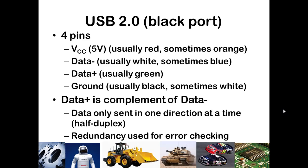Going from USB 1 to 2 was not that much different — really a matter of data speed — but there was a significant change with USB 3.0. USB 2.0 and earlier devices just have 4 pins. You can generally tell by the color of the USB port: 1 was typically white, 2 was black, and 3 is blue. If you were to cut open a USB data cable, you would see 4 wires in there.